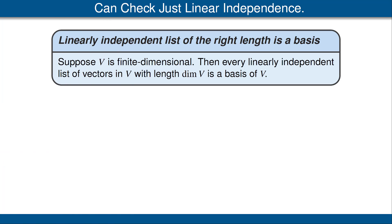Now we come to a major result. Recall that to be a basis, a list needs to satisfy two conditions: first, it needs to be linearly independent, and second, it needs to span the vector space. This theorem says that we only need to check the linear independence condition, provided that the list of vectors has the right length — meaning the length equals the dimension of V. If V is finite dimensional, then every linearly independent list of vectors in V whose length equals the dimension of V is a basis of V.